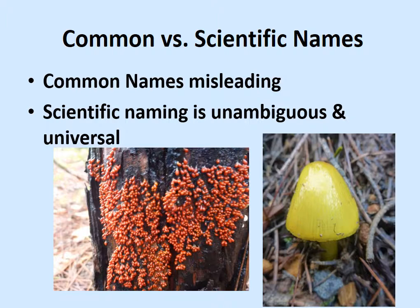Every living thing on the planet has a unique species. Think of the word 'specific' — it refers to one thing, one specific thing. And that is where the word 'species' comes from.